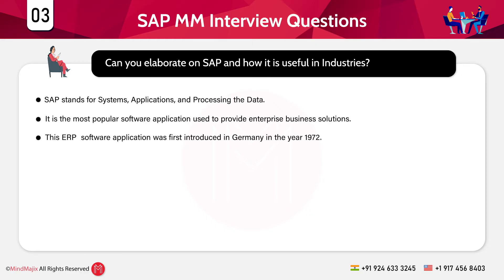The next question is: can you elaborate on SAP and how it is useful in industries? SAP stands for Systems Applications and Processing the Data. It is the most popular software application used to provide enterprise business solutions. This ERP software was first introduced in Germany in 1972. ERP stands for Enterprise Resource Planning. SAP obtains details from one business process and integrates them into another, speeding up business processes and providing real-time solutions.